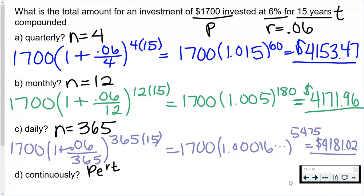Hopefully you tried them on your own. This is my work—go ahead and pause the video so you can make any corrections. One thing I will say with Part C: notice in the parentheses I end up with 1.00016 and then I put some dots after it. Please do not clear your calculator when you're doing a problem like this, because if you round too early, your answers will be off. You don't want to round until the very end, so keep the numbers in your calculator and use them as you go. You end up with 0.06 divided by 365, then don't clear it, add the one, don't clear it, raise it to the exponent, don't clear it, multiply by 1700.